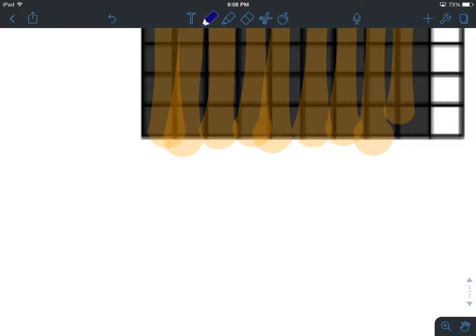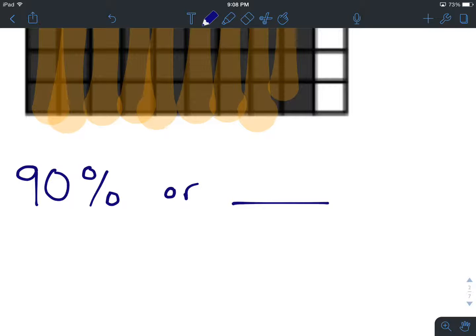So how do we go about writing that? We can write it as 90%, or we can write that as the number of shaded parts, which is 90, over the total number of parts, which is 100. And there's our second square.